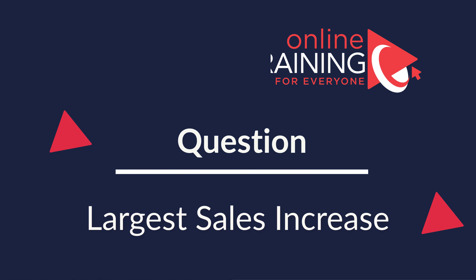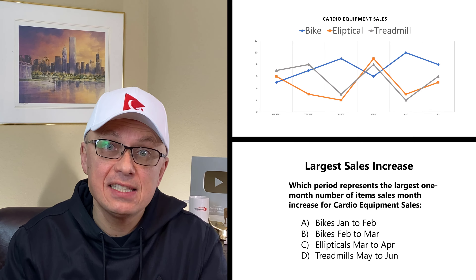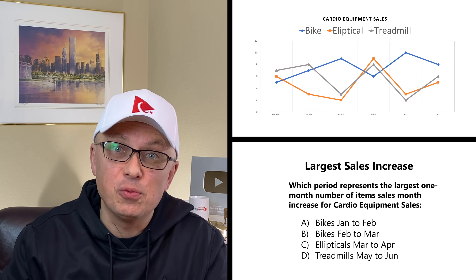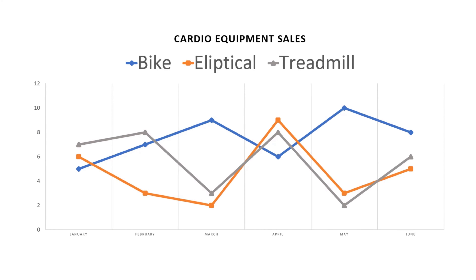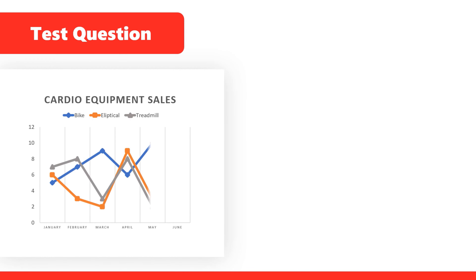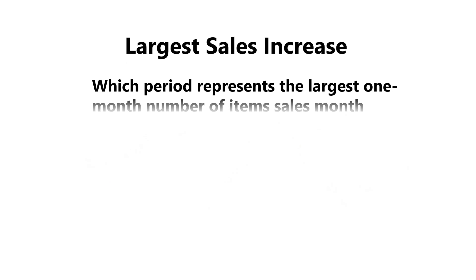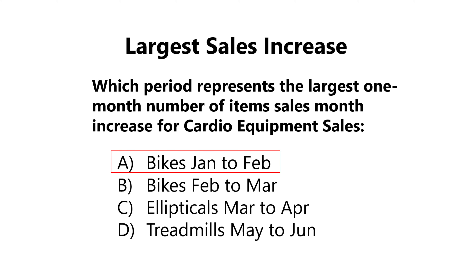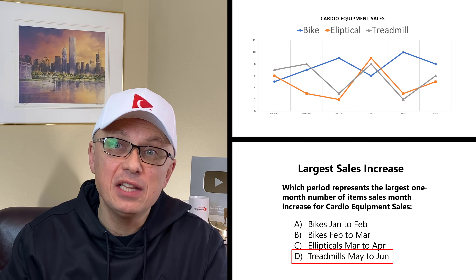A lot of times you might get a question asking you to determine the largest sales increase. You're typically presented with a graph showing lines that represent different sales. In this case, we have a chart showing sales of cardio equipment from January to June: bikes represented by the blue line, ellipticals by the orange line, and treadmills by the gray line. The question asks you to determine which period represents the largest one-month number of item sales increase. Choices are: A — bikes January to February, B — bikes February to March, C — ellipticals March to April, and D — treadmill May to June.